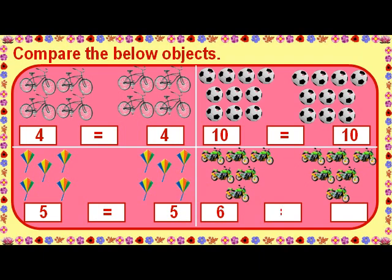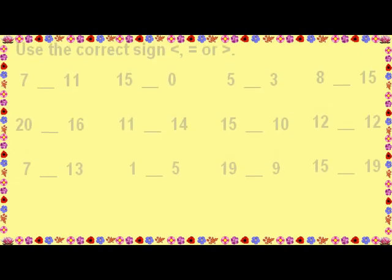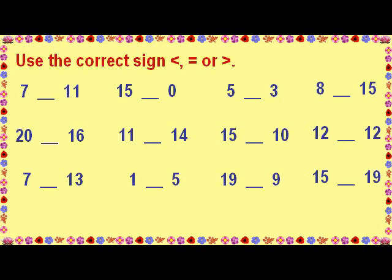Use the correct sign: less than, equal to, or greater than. 7 < 11, 15 > 0, 5 > 3, 8 < 15, 20 > 16, 11 < 14, 15 > 10, 12 = 12.